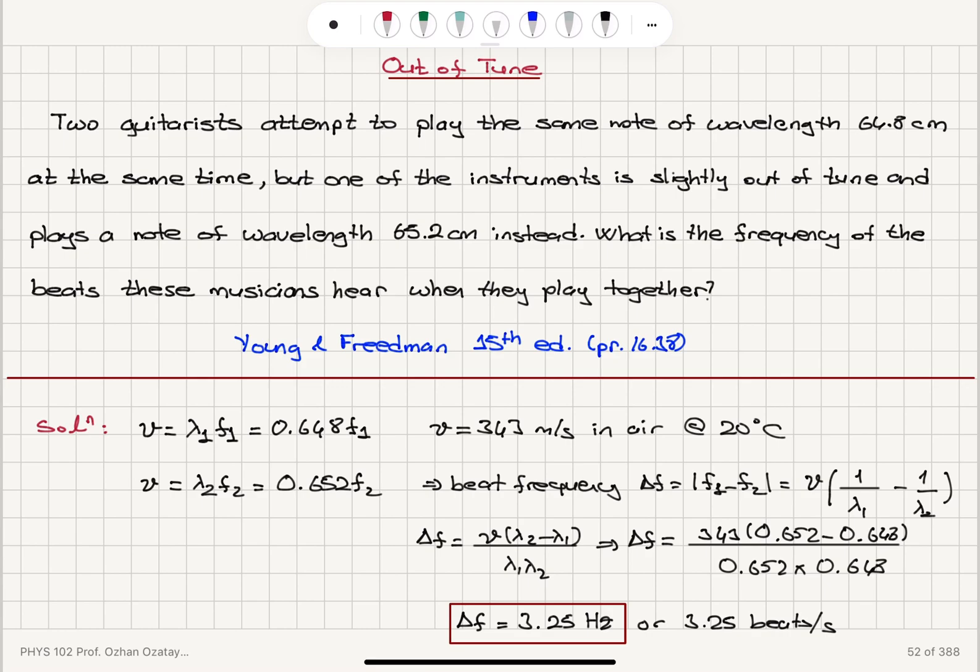Okay, so we have a situation where two guitarists are attempting to play the same note. One plays a note with wavelength 64.8 cm, the other one 65.2 cm. And since they're out of tune, they will be beating. So these two musicians will hear a beat frequency and that will be given by the